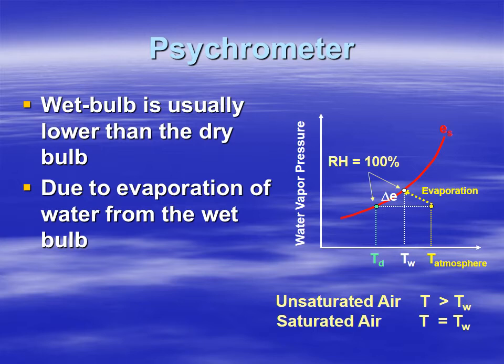At higher temperatures we can have a higher water vapor pressure, which is directly proportional to the mass of water vapor in the air. At colder temperatures, saturation water vapor pressures are much lower, indicated by the lower values on the red curve curving off to the left.